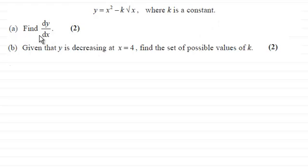And in part A, asked to find dy by dx for two marks. And in part B, given that y is decreasing at x equals 4, find the set of possible values of k for two marks.